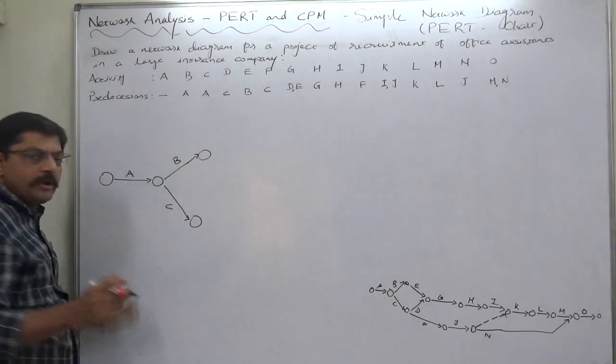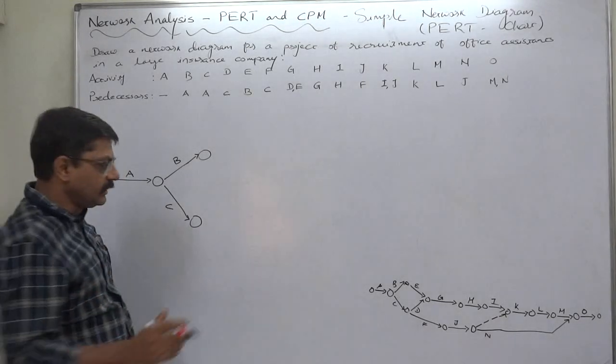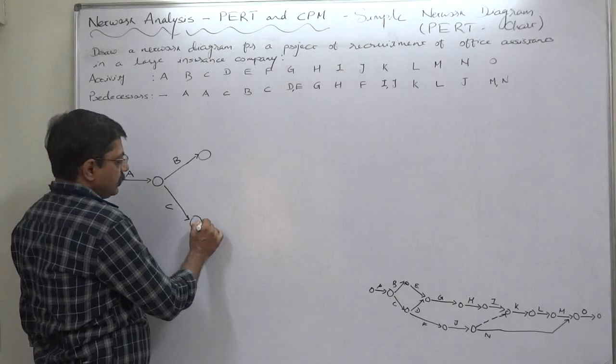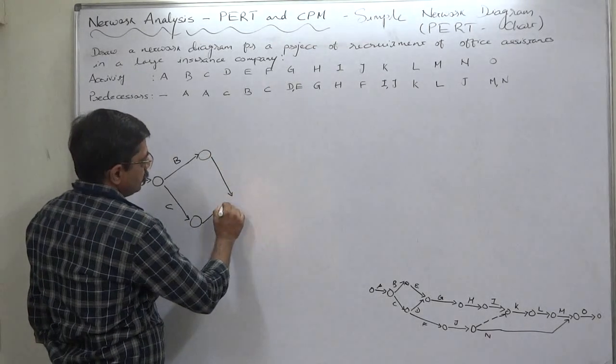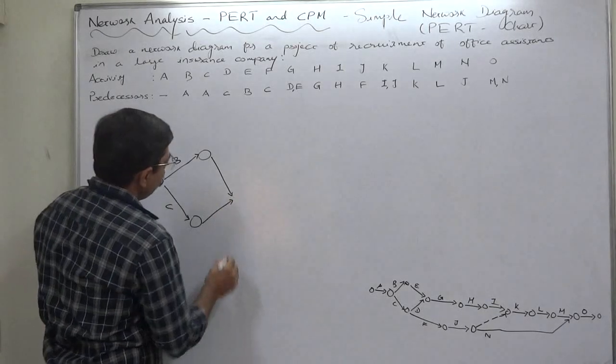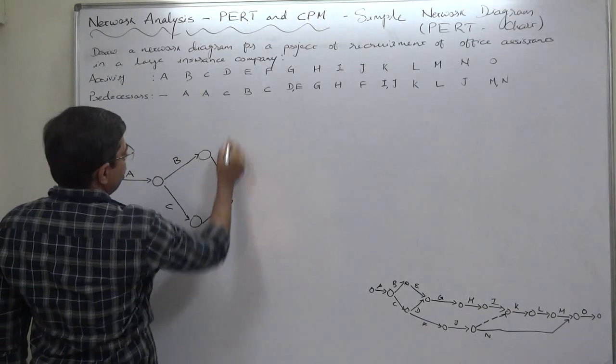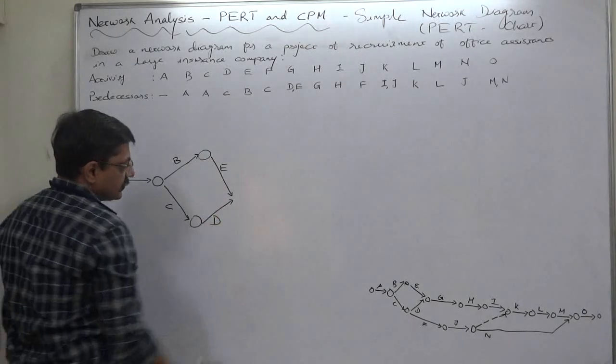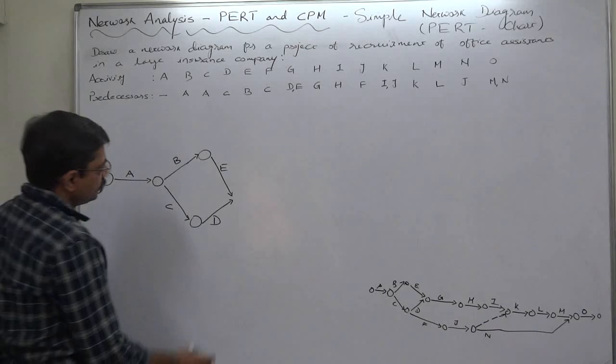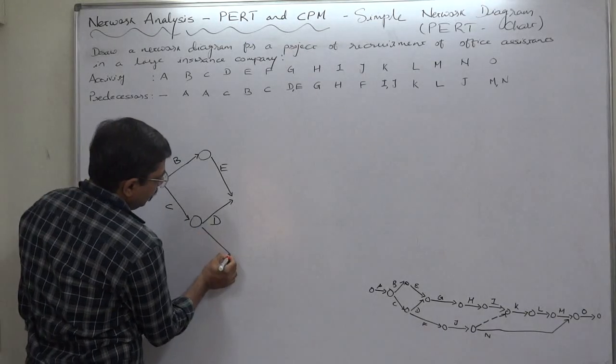But again following the rule of vertical order, it's easier to go forward. From B, E starts, and from C, D starts. From C also F starts.